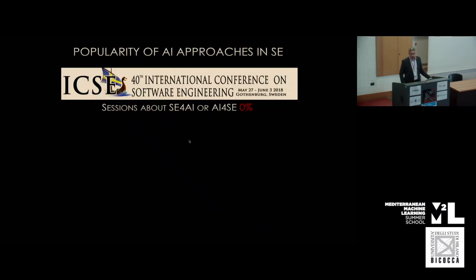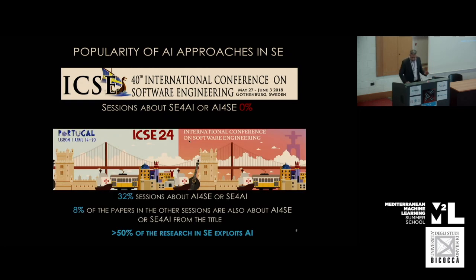To give some numbers: if we go back to our flagship conference, the International Conference on Software Engineering, up to six years ago there were no sessions about AI and software engineering. This year, I could identify at least one-third of the sessions dedicated to this topic, and easily another eight percent of papers from the title alone are also related, without even considering the content. So I believe more than half of the papers are studying the interaction and applying AI to diverse software engineering tasks.